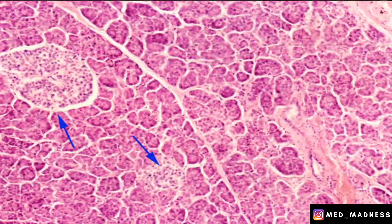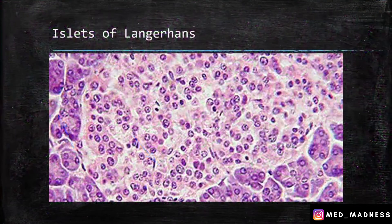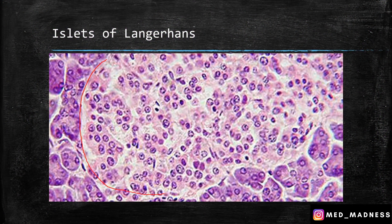Now we will see the histology slide — this is the pancreas. You can see the majority of the pancreatic gland is formed by the acini. The most distinguishing feature of the pancreas is the islet of Langerhans. This is the islet where you have different types of cells that secrete hormones. On higher magnification, you can see the islets of Langerhans very clearly surrounded by the acini.